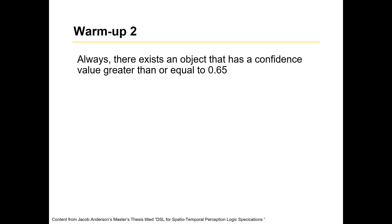We have a second warm-up question here, which is on the similar line, which is that always, there exists an object that has confidence value greater than or equal to 0.65. So the hints here are, we have an always operator, because that's what the requirement asked us to. Then we have, there exists an object, because we are just talking about one single object. We just need the existence of one single object. We don't need any for-all.